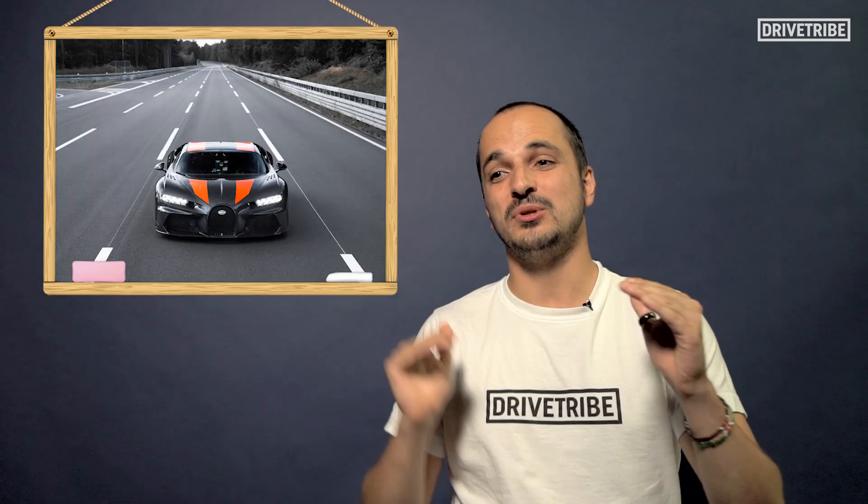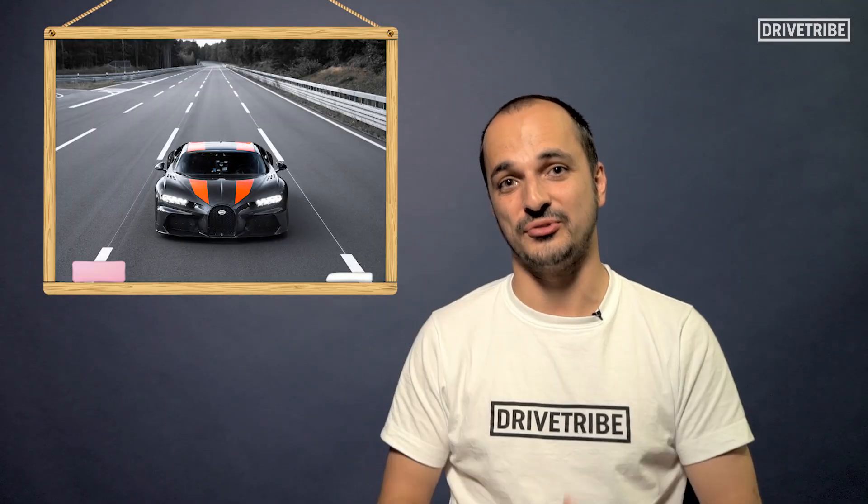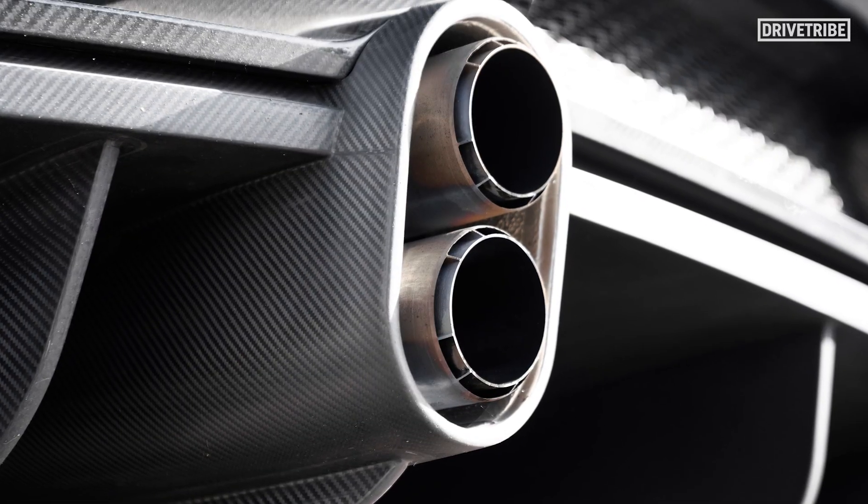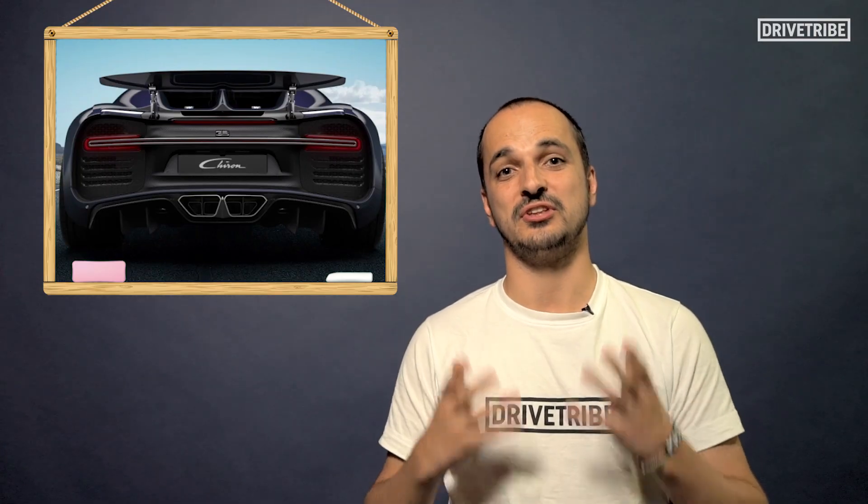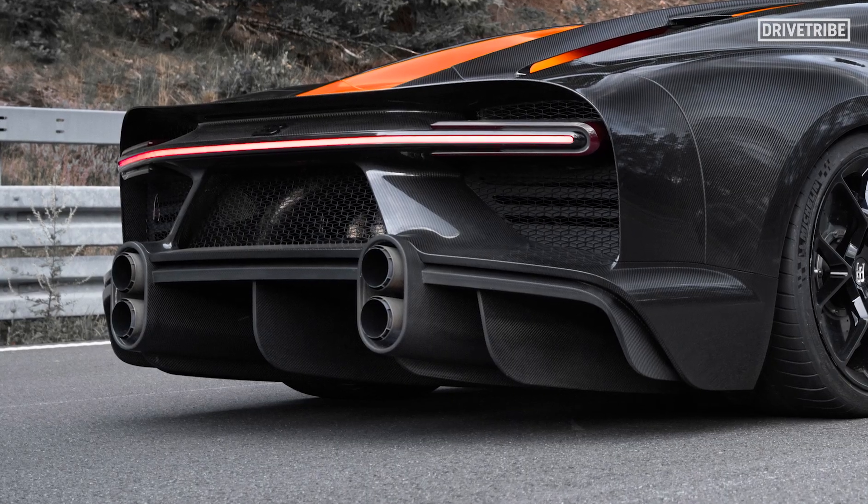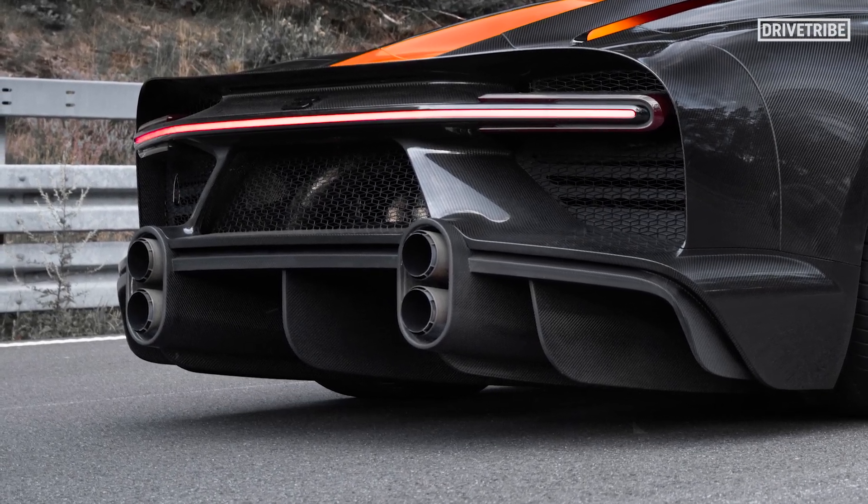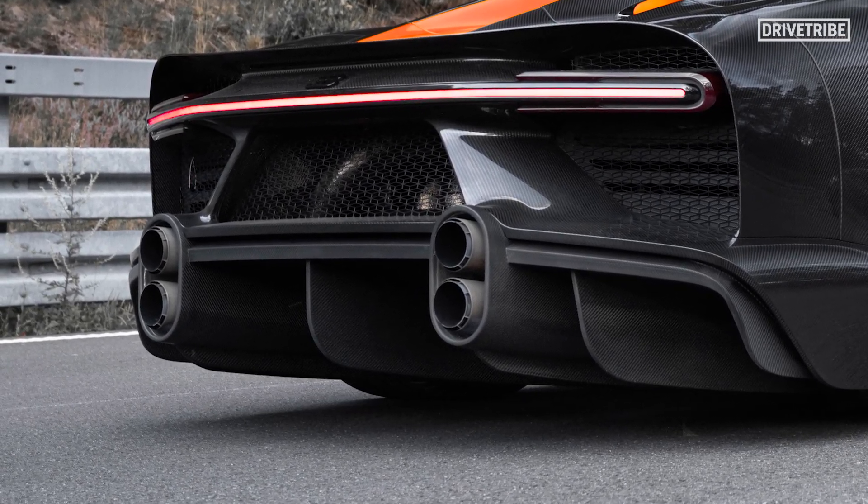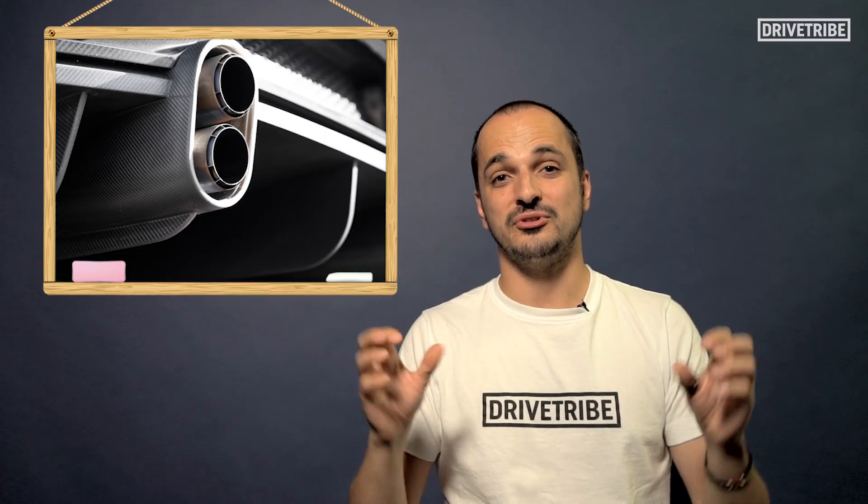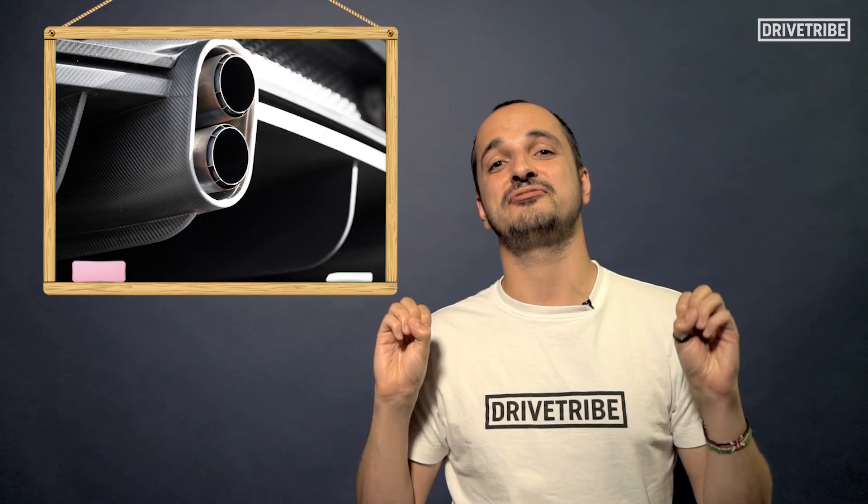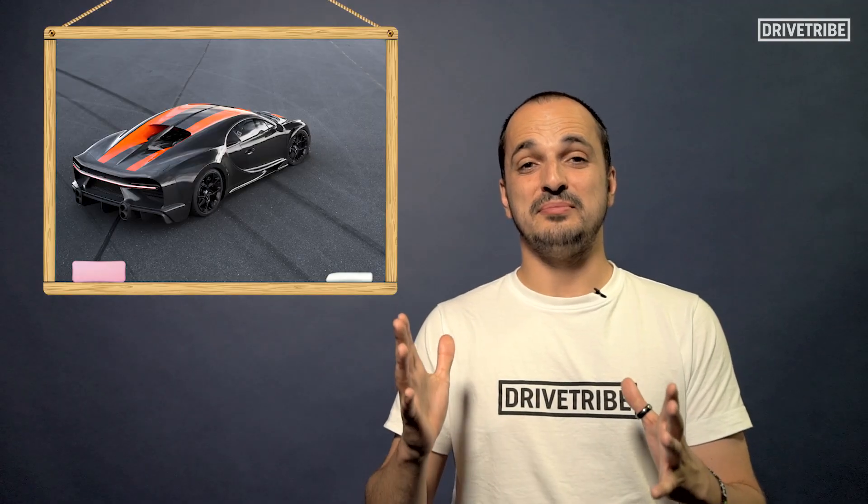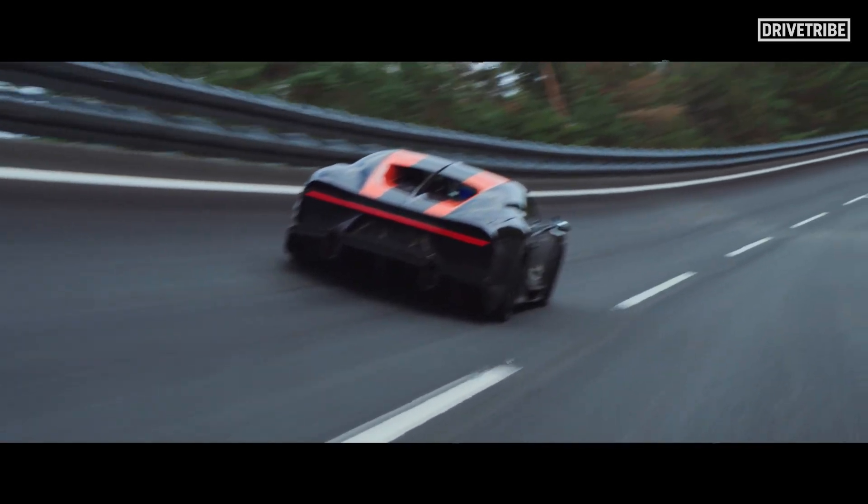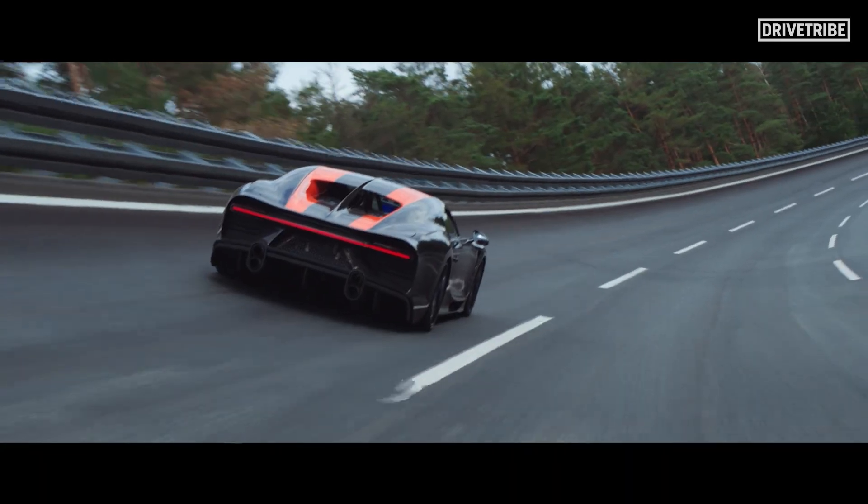My favorite modification is the tailpipes. In the place of those big central exhausts you see on the normal Chiron are these extremely cool quad pipes that are put either side of the car. They've been repositioned so that they expel the exhaust gases as far away from the rear of the car as possible. This stops them messing around with the car's aero as well as looking absolutely insane.